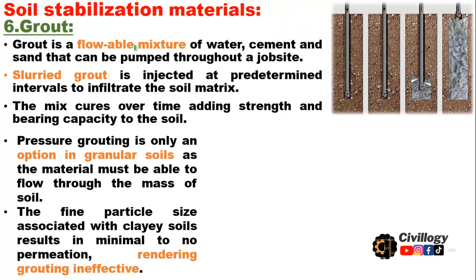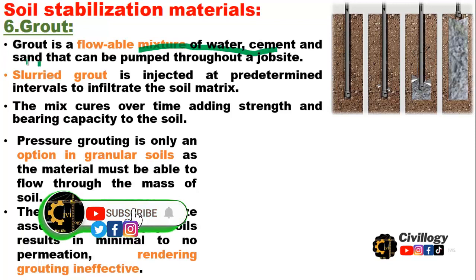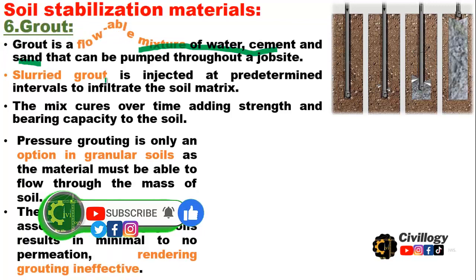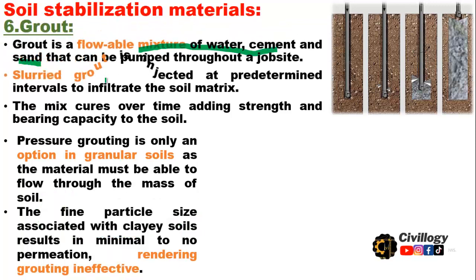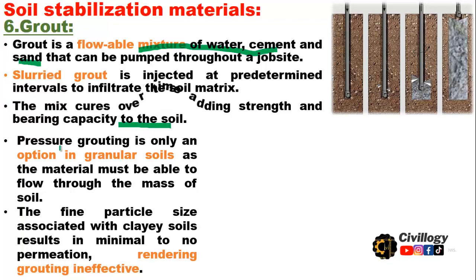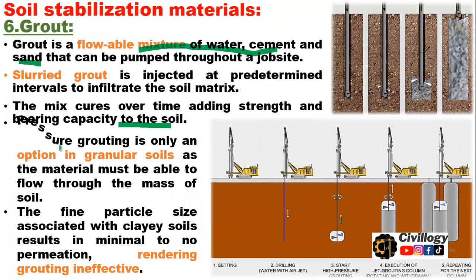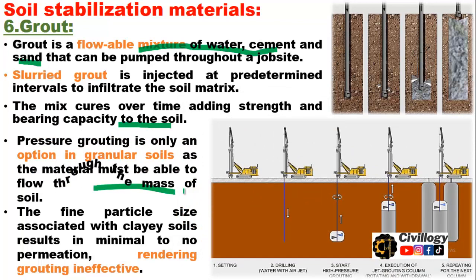The sixth and last soil stabilization material is grout. Grout is a flowable mixture of water, cement, and sand that can be pumped through a job site. Slurried grout is injected at predetermined intervals to infiltrate the soil matrix. The mix cures over time, adding strength and bearing capacity to the soil. Pressure grout is only an option in granular soil, as the material must be able to flow through the mass of the soil.